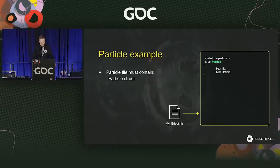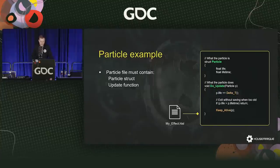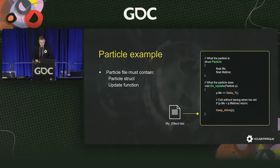After defining what the particle is, we define what it does by implementing an update function. The particle we created is passed to the update function, and we can modify it there. In this simple example, we just accumulate delta time to the particle's life variable, and when it exceeds the lifetime variable, we exit the update function and don't keep the particle alive anymore. We're not even rendering the particle here — the render component is optional. The system supports all HLSL stages, branching, and all intrinsics, giving us a great deal of flexibility. For example, it's trivial for a particle to handle multiple different states and execute update logic based on a given state.